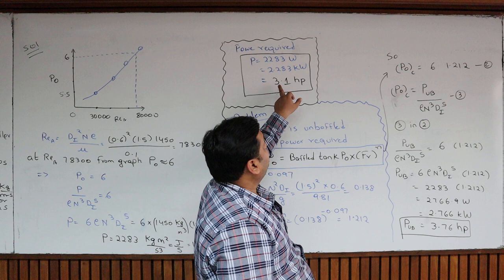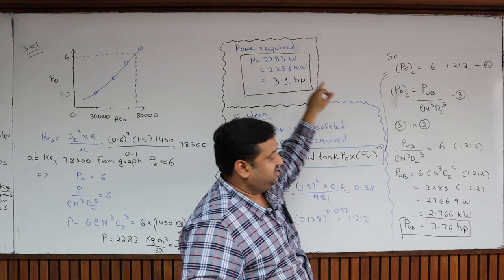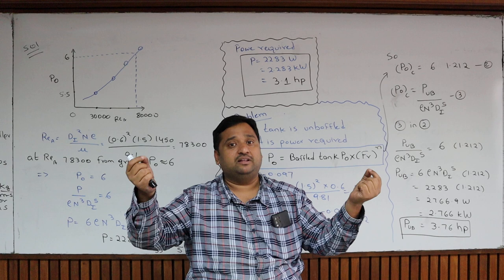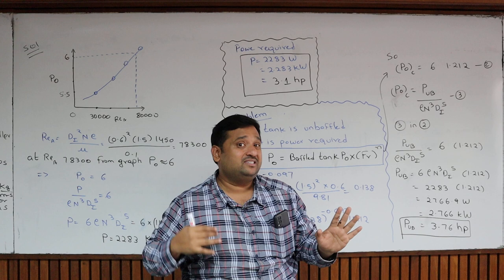Comparing the two cases: with baffles you need only a 3.1 HP motor, but without baffles you need a 3.76 HP motor. When baffles are removed, vortex formation occurs, mixing is inefficient, and the agitator must work harder — that is why the power required for an unbaffled tank is higher than for a baffled tank. I hope you have learned something new; thank you very much.